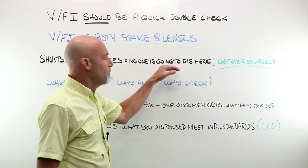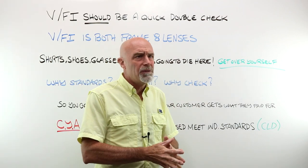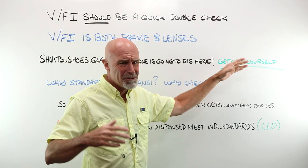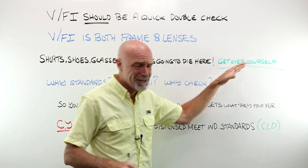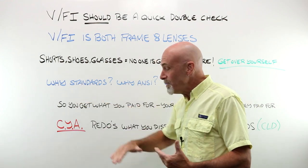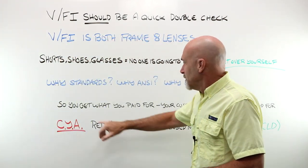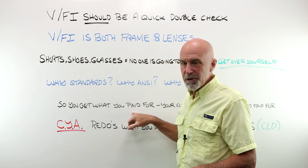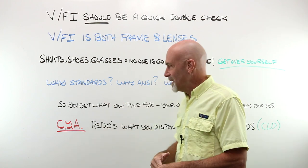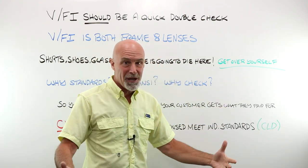Look, no one is going to die here when we're talking about applying these standards and tolerances. What if I fill an expired prescription and somebody drives and gets into it? Nobody is going to die here. Get over that nonsense. You're not helping our profession. Why do we have standards? Why do we have ANSI? Why do we bother to check? So that you get what you paid for. Lab bills are expensive. If you order a minus seven, you want to make sure you get a minus seven, plus or minus the tolerance that is allowed in the industry. Hence, you pass that on and make sure that your customer gets what they paid for.